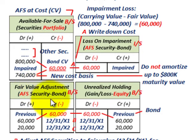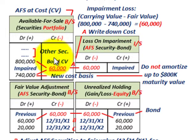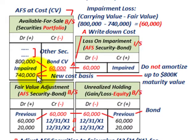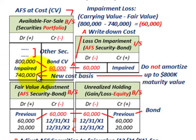We also need to do a fair value adjustment. The $740,000 is our new cost basis going forward. An important point: with this new cost basis, we do not amortize it back up to the $800,000 maturity value. Even though the bond has a maturity value of $800,000, now that we've written it down to $740,000, it just sits at that new cost basis — no amortization back up to original cost.